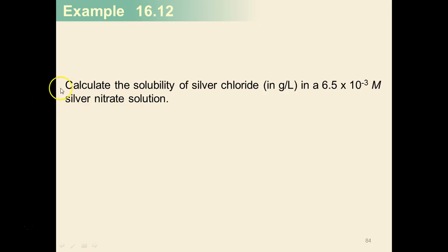So the silver nitrate solution is going to have the silver cation, and that's going to be one source of silver. Another source of silver could be the dissolving of silver chloride.